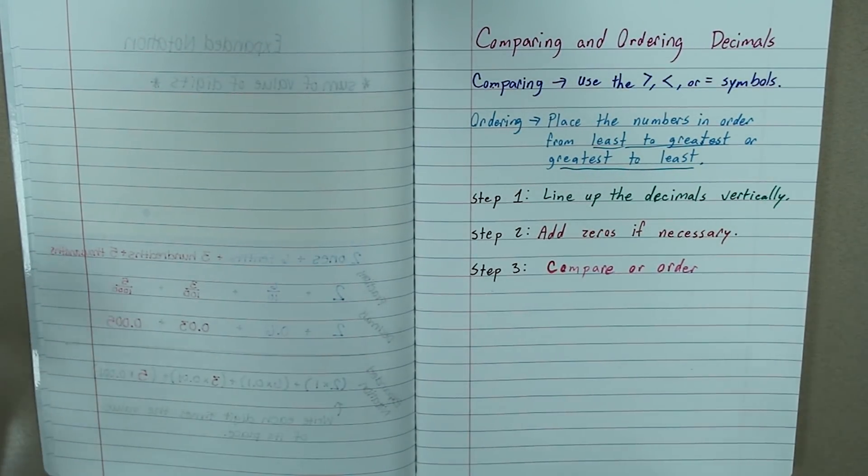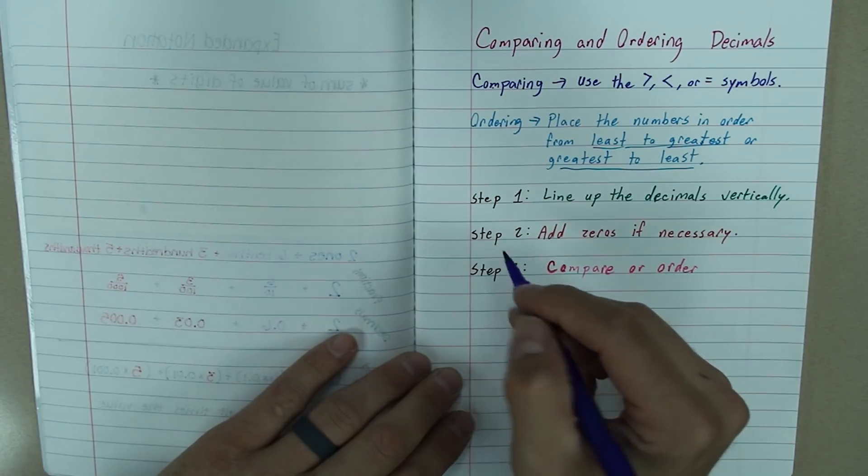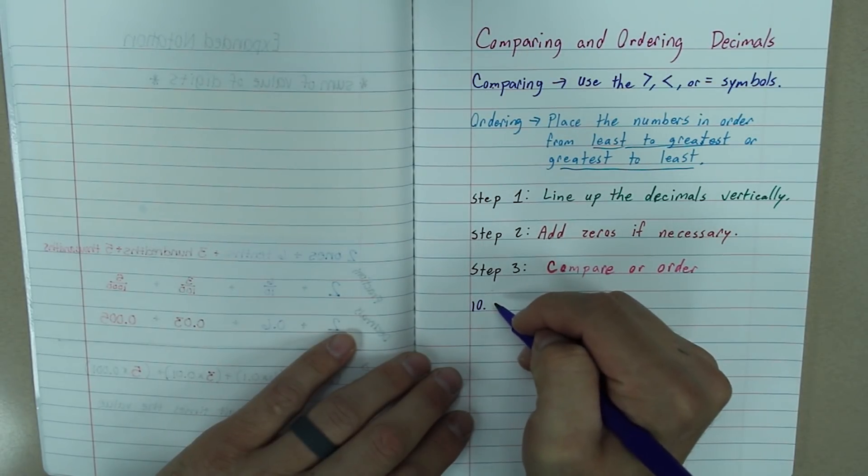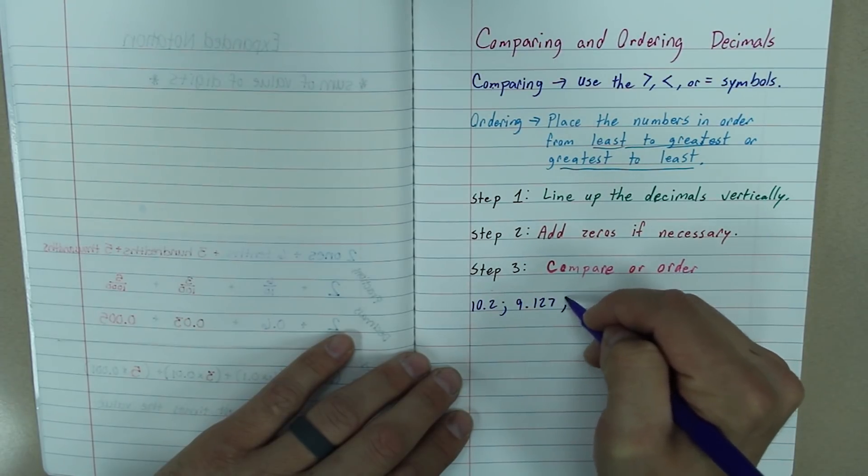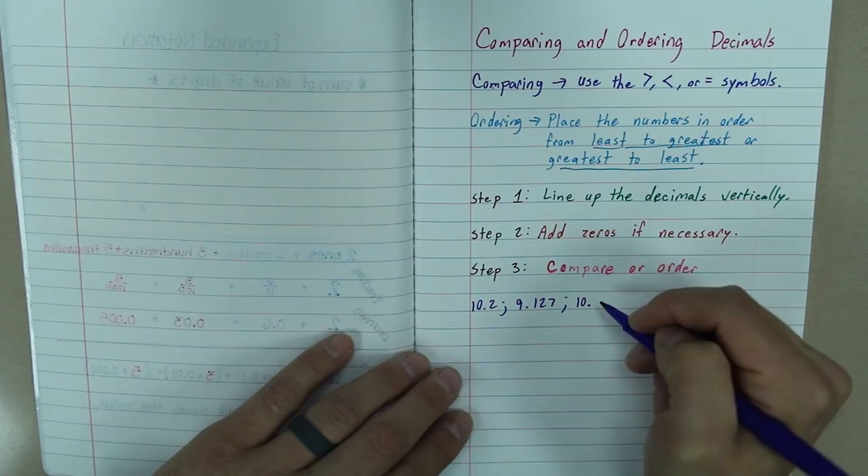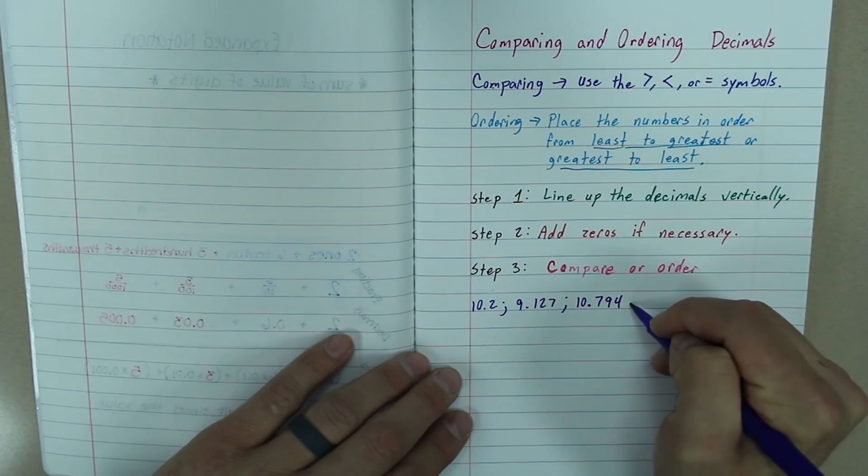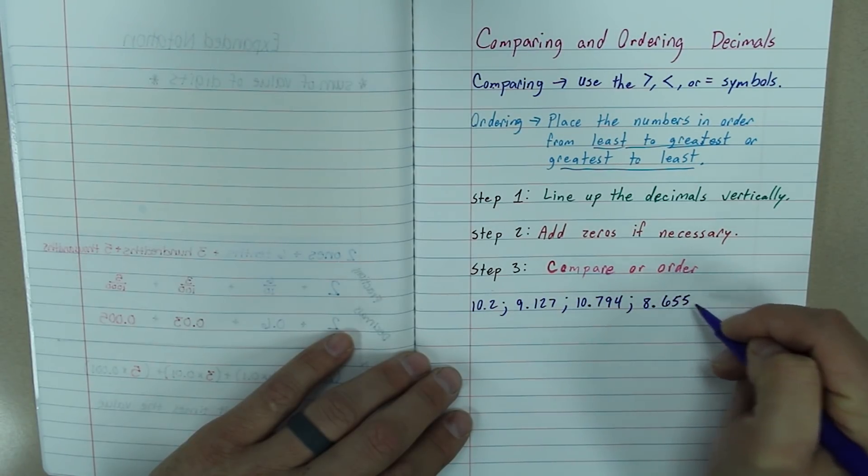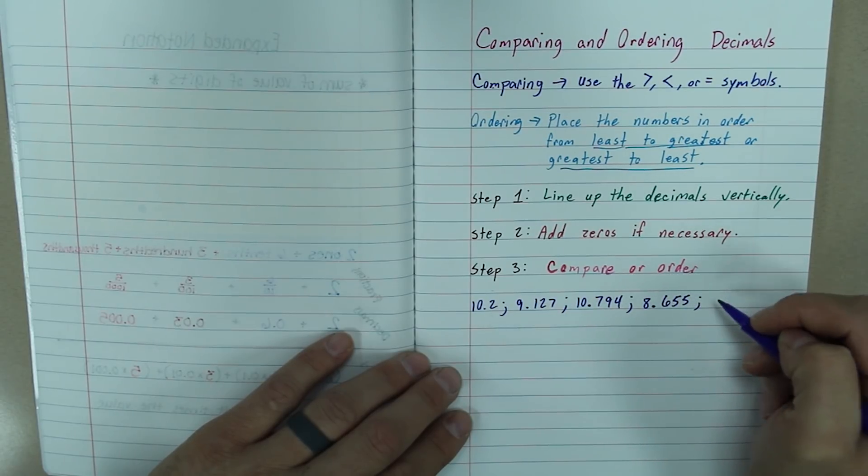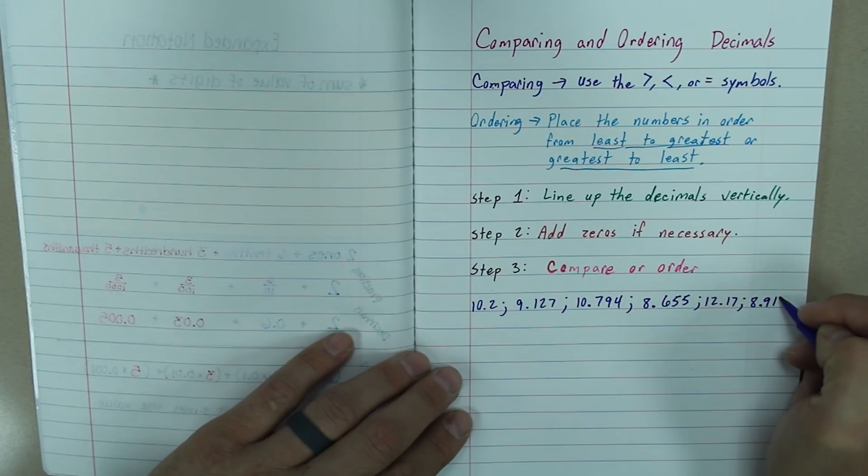So, let's take our numbers that we had from our race. We had 10.2, 9.127, 10.794, 8.655, 12.17, and last, 8.913.